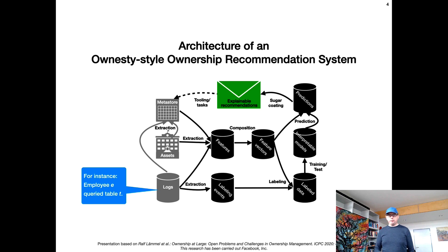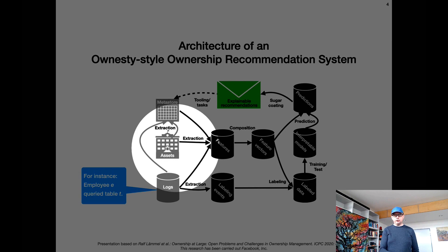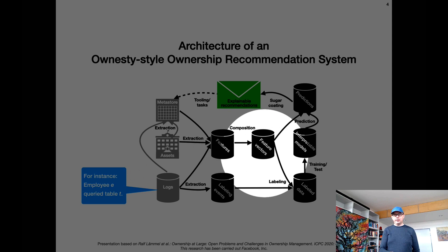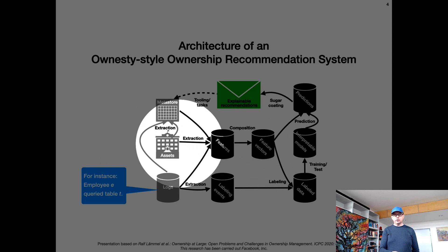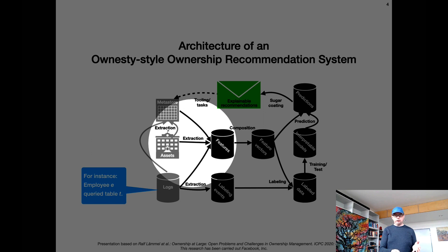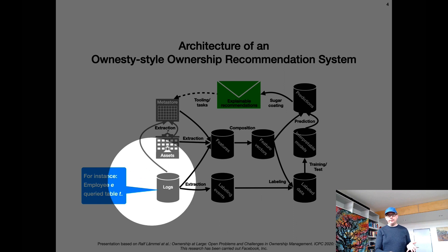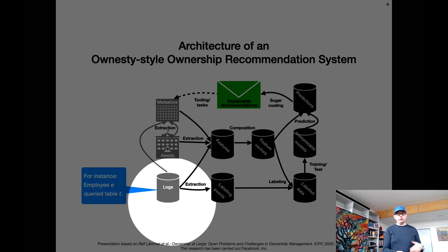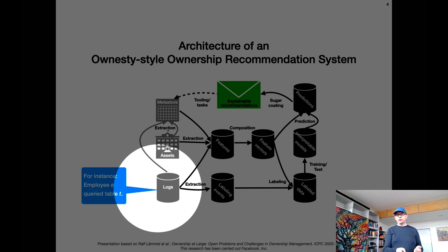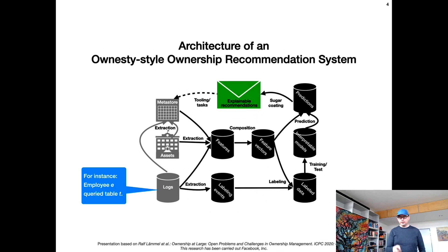This is the machine learning based architecture for an ownership recommendation system. In a sense, how we extract features from assets feels a little bit like mining software repository work, because we continuously extract stuff from assets such as source code files. It's a bit broader though — we might also process arbitrary logs, not just version control logs, but logs of pretty much any tooling used in software development. This nicely generalizes what we do in basic mining software repository approaches.